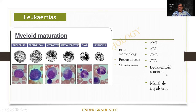Leukemoid reaction and all of them can be kept as spotters. An AML — they can focus on an Auer rod. CML is definitely a slide for you people. Leukemoid reaction is a chart that is commonly kept. Multiple myeloma is also a chart kept for students.